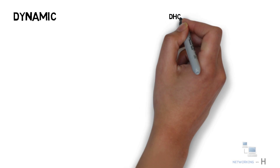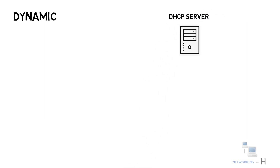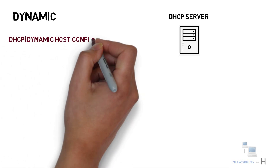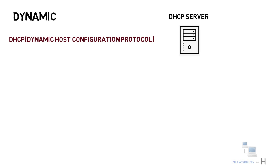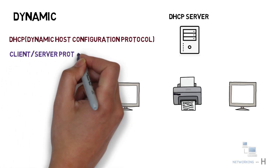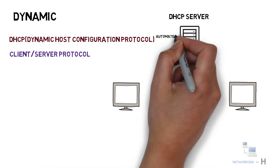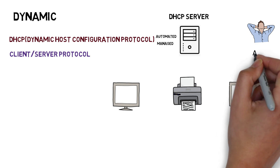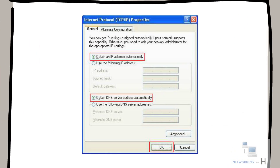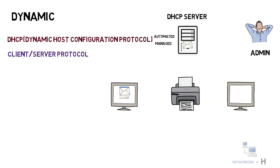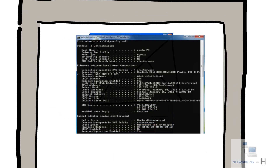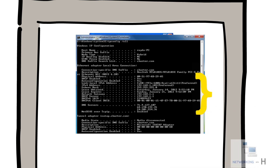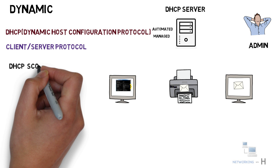In the dynamic method, IP addresses are assigned to end systems by a DHCP server. DHCP stands for Dynamic Host Configuration Protocol — it is a client-server protocol used for address assignment. With DHCP, this entire process is automated and managed centrally, relieving the administrator of manually assigning addresses. On the client machine, you select 'obtain IP address and DNS automatically,' and it automatically provides all parameters — IP address, subnet mask, default gateway, and DNS — to the end device.